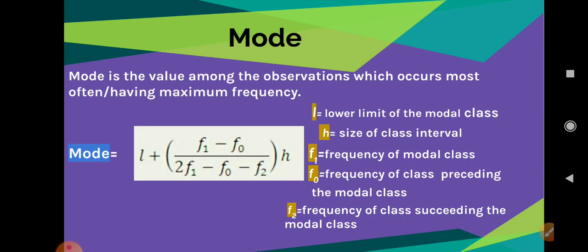Now about mode. We have the formula: mode equals l plus (f1 minus f0) divided by (2f1 minus f0 minus f2), into h. Here, l is the lower limit of the modal class, h is the size of the class interval. F1 is the frequency of the modal class — we select the highest frequency as f1. F0 is the frequency of the class preceding the modal class, and f2 is the frequency of the class succeeding the modal class.